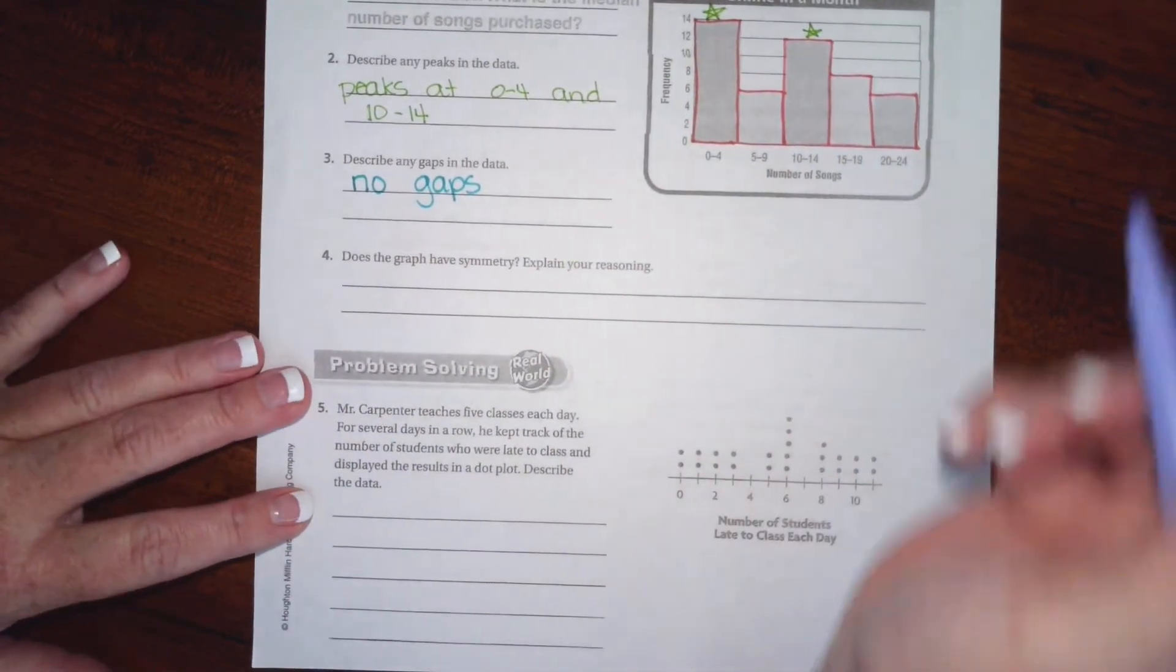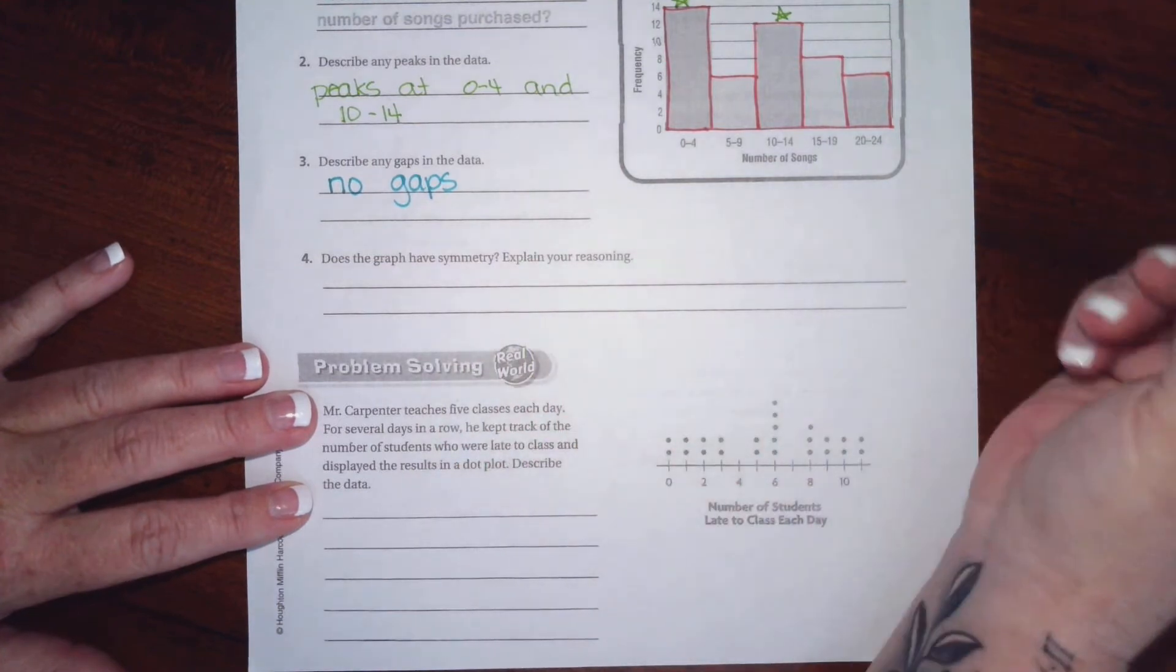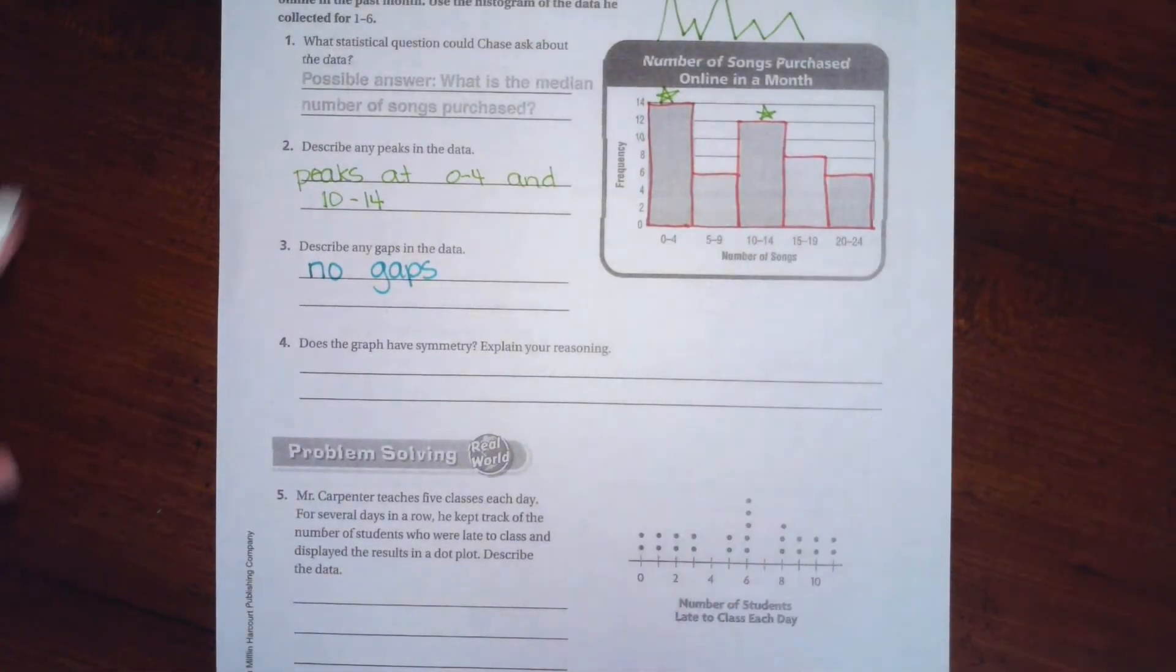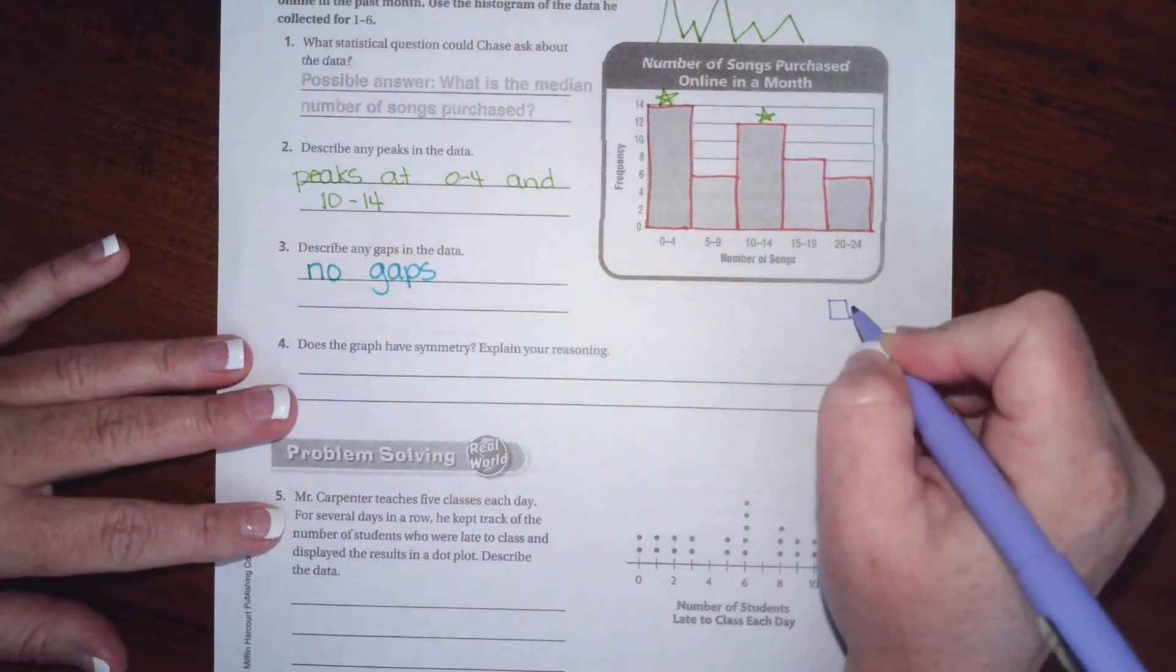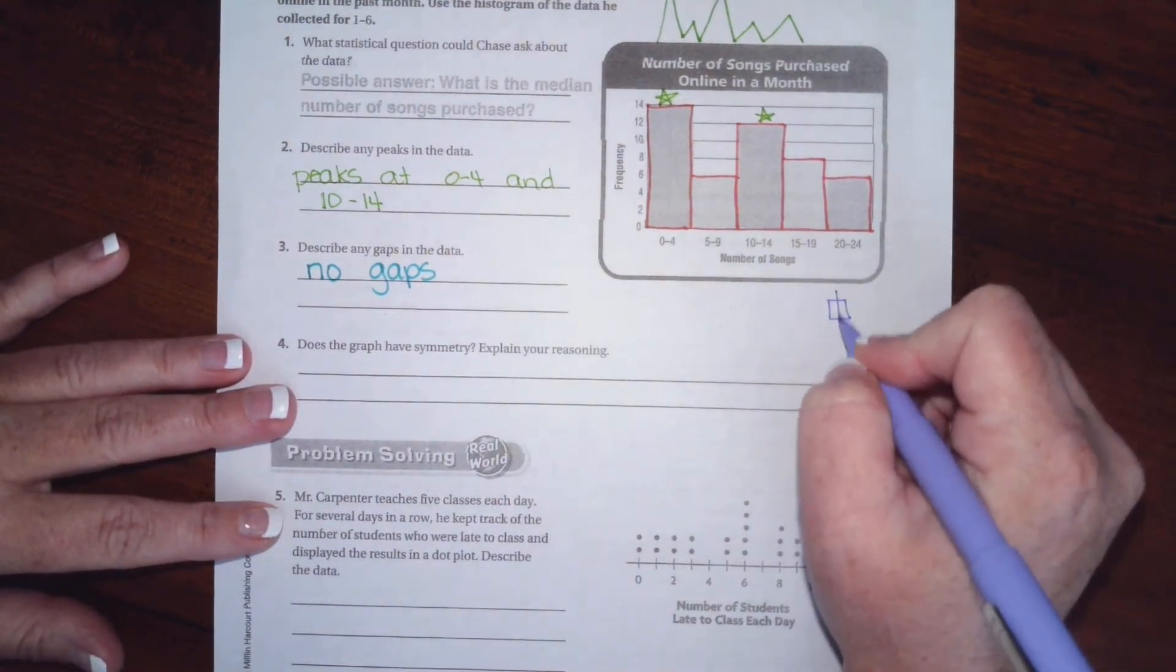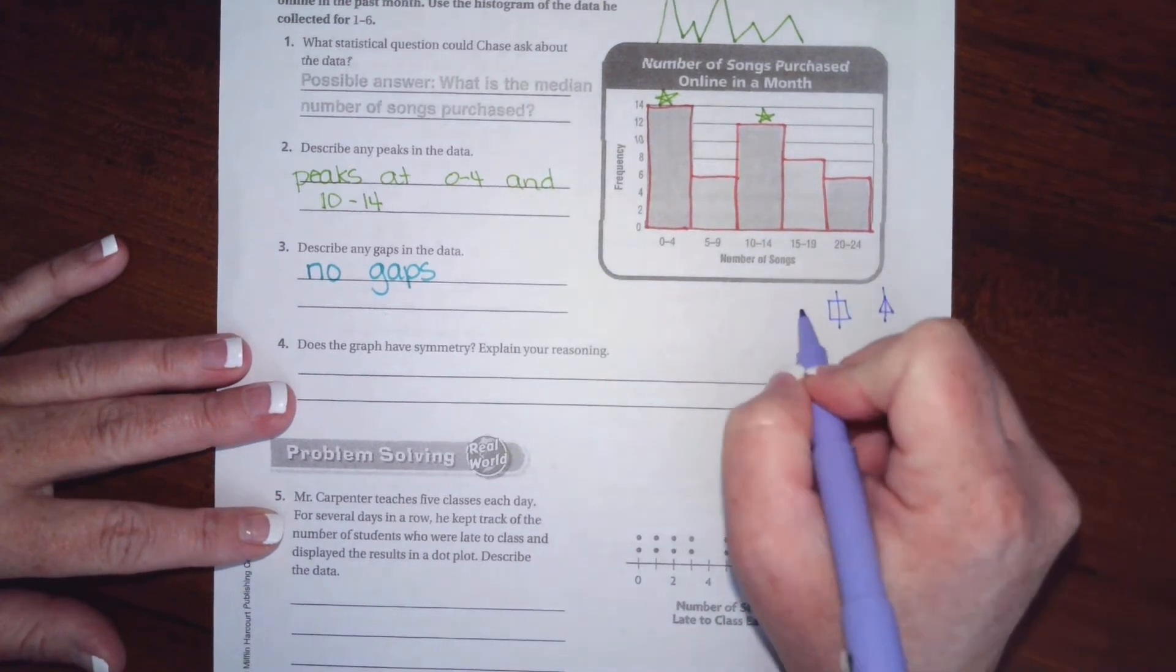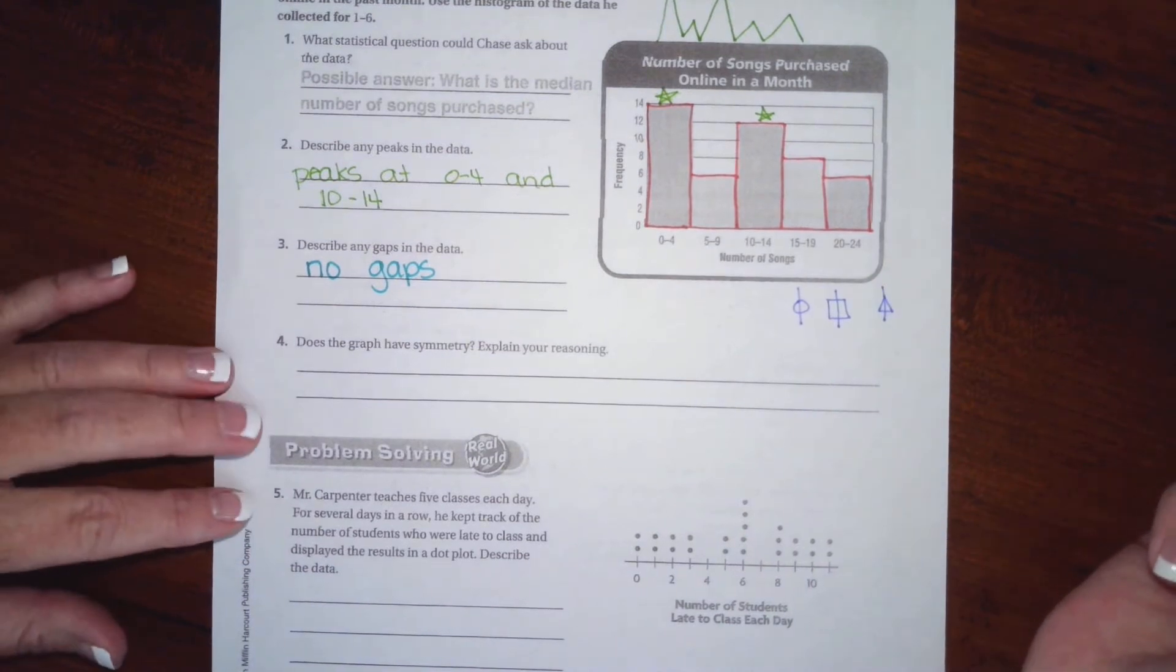Now they want to know if the graphs have any symmetry. So that means symmetry is when you fold things in half and they're identical. When I fold a square in half, it would be identical. When I fold a triangle in half, it's identical. When I fold a circle in half, it's identical.